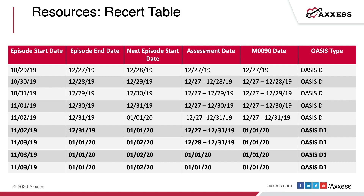There's a quick reference table here to help you understand your episode start date scenarios. For example, if the episode is 10-29 to 12-27, your next episode start date is 12-28, your assessment date would be 12-27 at the latest, your M90 date would be 12-27, and you use OASIS D. Looking at the fourth row from the bottom: episode 11-2 to 12-31, next episode starts 1-1-20, assessment date between 12-27 and 12-31, M90 date needs to be January 1st, 2020, and you use OASIS D1 since this episode is paid under PDGM.